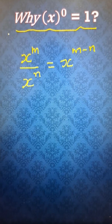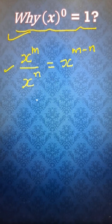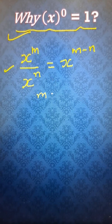So the result which is written here is a corollary of this result. What happens when you put m equal to n?